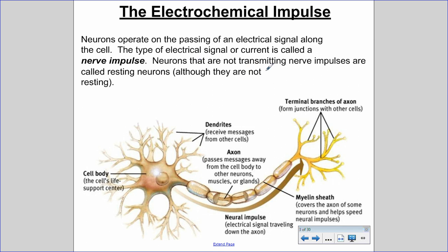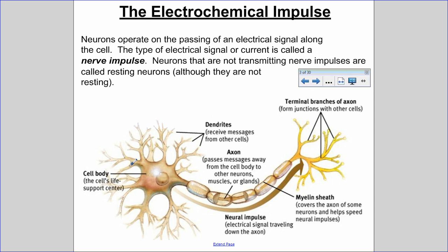Neurons that are not transmitting nerve impulses are called resting neurons, although they are not actually resting — they're very active cells. If we look at the structure of a neuron shown in the diagram here, we can see a number of specialized features. Starting with the cell body, this is where you'd find the nucleus and where everything the cell needs gets produced. Extensions coming off the cell body are called dendrites, which receive messages from other neurons.